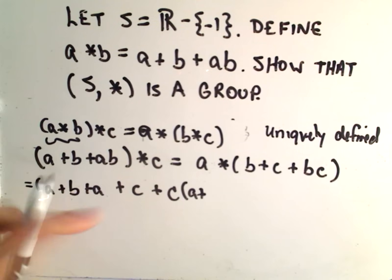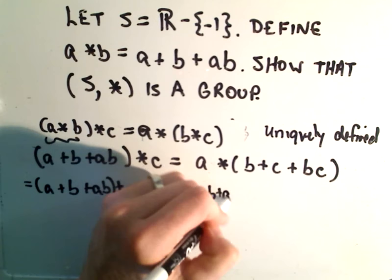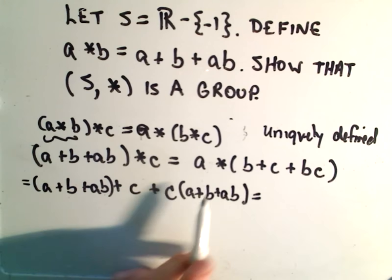I left out the B on the first part. So, A plus B plus AB. And on the right side, we'll do the same thing.